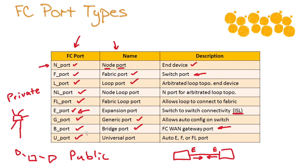The U port is a universal port. We see these on fiber channel switches, and a universal port differs from a generic port in a specific way: it can automatically configure itself as an E port, an F port, or an FL port — so it is somewhat more limited in scope compared to a generic port on a fiber channel switch.